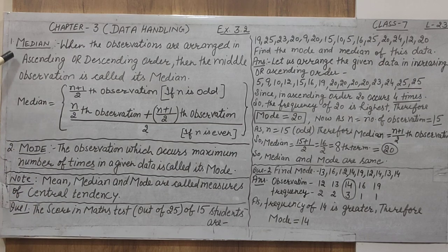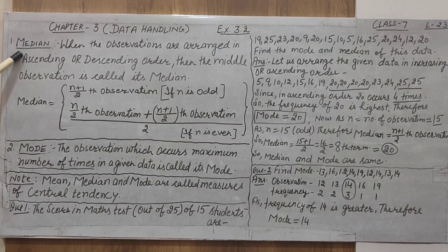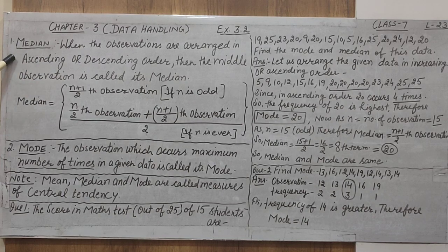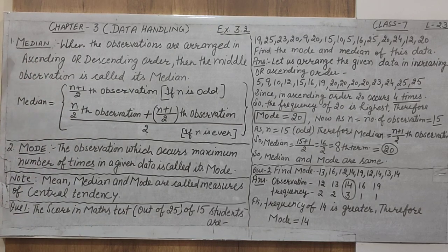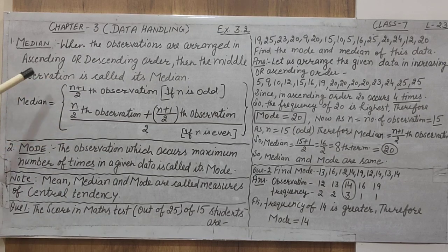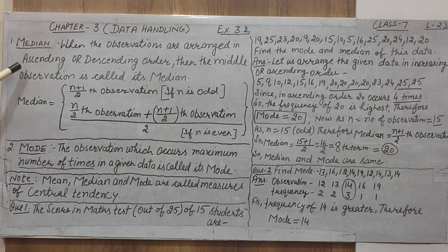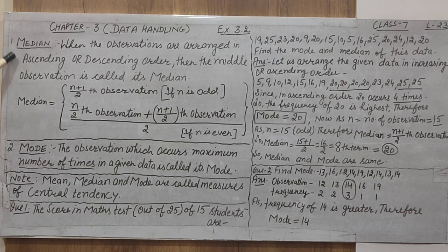First of all, understand the meaning of the median. What is the median? Previously we understood about the mean. Mean is the average. What is the formula for the mean? Sum of all the observations divided by the number of observations. There is a particular formula — first you observe the observations, then you use the formula.